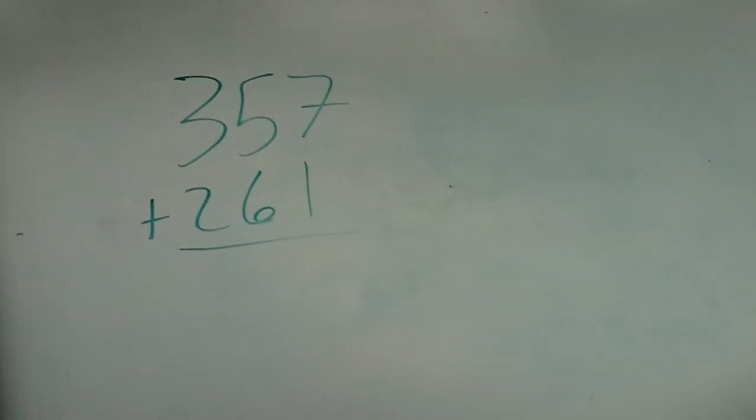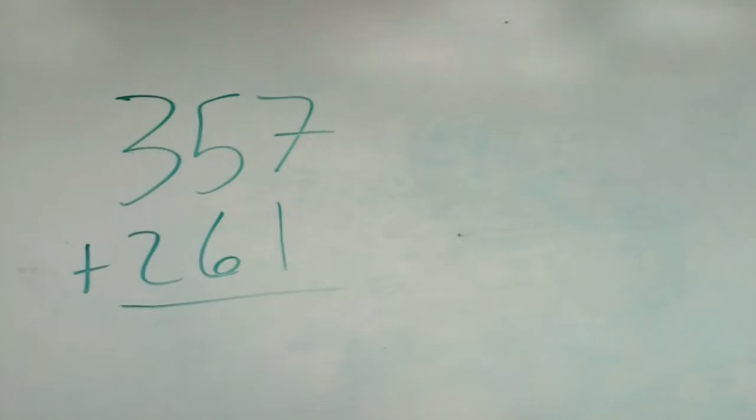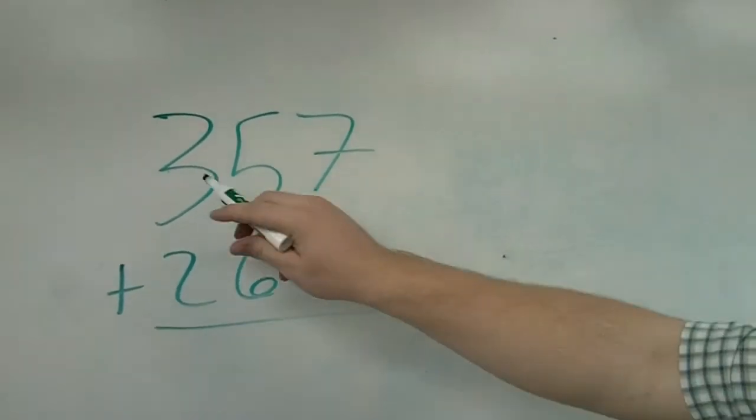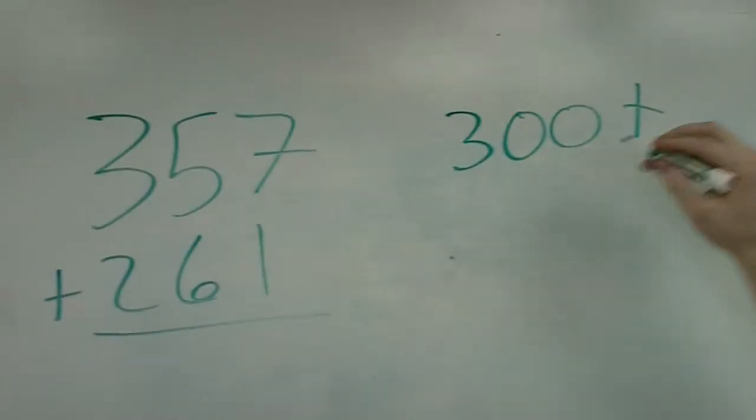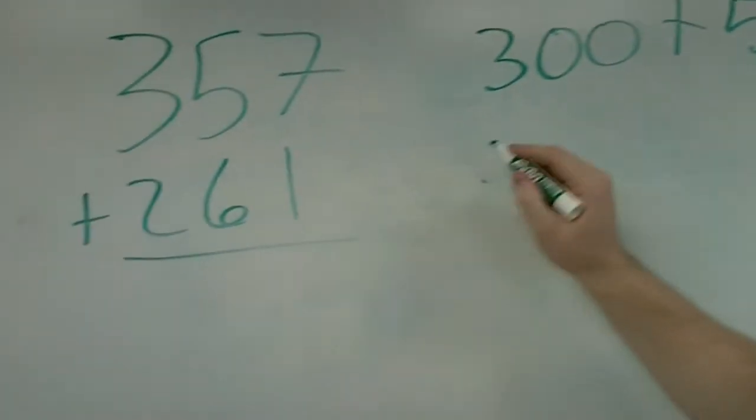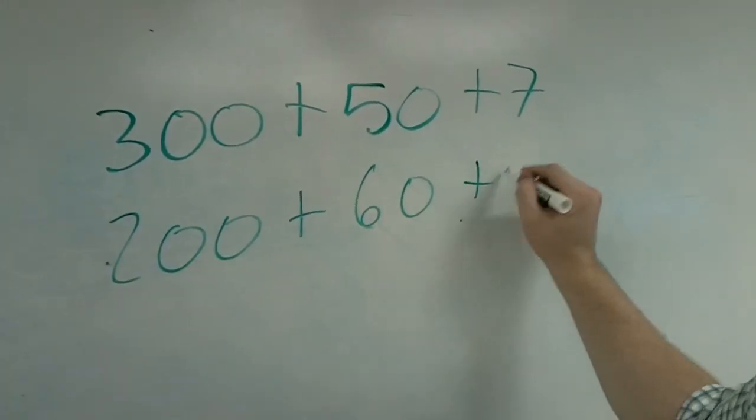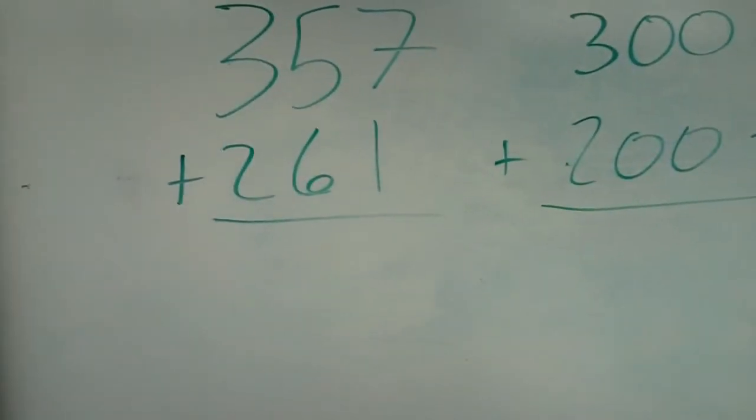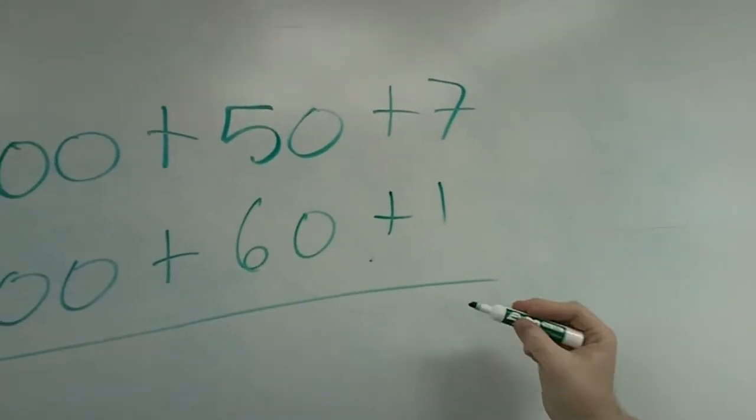Okay, so we're going to again write this out in expanded form, so please be writing this down on a piece of paper as we go so that you continue to practice the organizational part of this, which is half of what we're trying to learn here. So we're going to write out 357 in expanded form. That is 300 plus 50 plus 7, and the other number is 200 plus 60 plus 1. So we're going to start in our ones column. 7 plus 1 is 8.